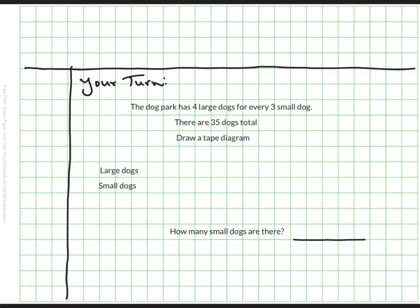Okay now it's your turn. Here's a question: at a dog park there are four large dogs for every three small dogs. This would be a ratio of four to three of large to small and there are 35 dogs total.